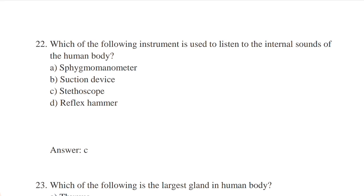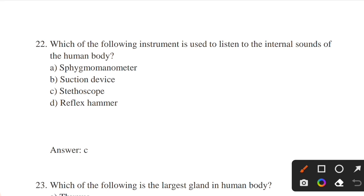Which instrument is used to listen to the internal sounds of the human body? Options: sphygmomanometer, suction device, stethoscope, reflex hammer. Answer: option C — stethoscope.